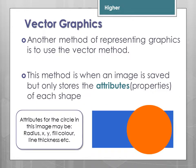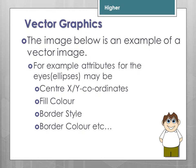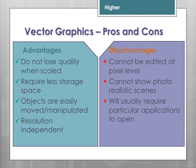Another method of representing graphics is the vector method. When a vector image is saved, it only stores the attributes or properties of each shape, so that the image can be redrawn. For example, attributes for a circle may include radius, x-coordinate, y-coordinate, and fill colour. An example using eyes (ellipses) might store centre x-y coordinates, fill colour, border style, and border colour. Advantages: it does not lose quality when scaled, requires less storage space, objects are very easy to move and manipulate, and images are resolution independent.